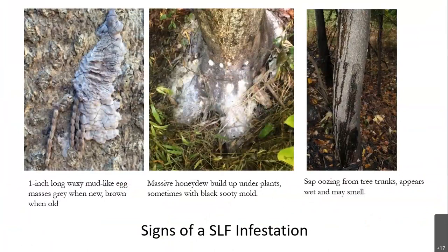SLF lay their eggs on nearly everything. Their egg masses have a waxy, mud-like appearance — grayish when new, turning brown as they age. The excrement, called honeydew, causes black sooty mold to build up underneath infested plants. Sap may also ooze from tree trunks due to SLF feeding.